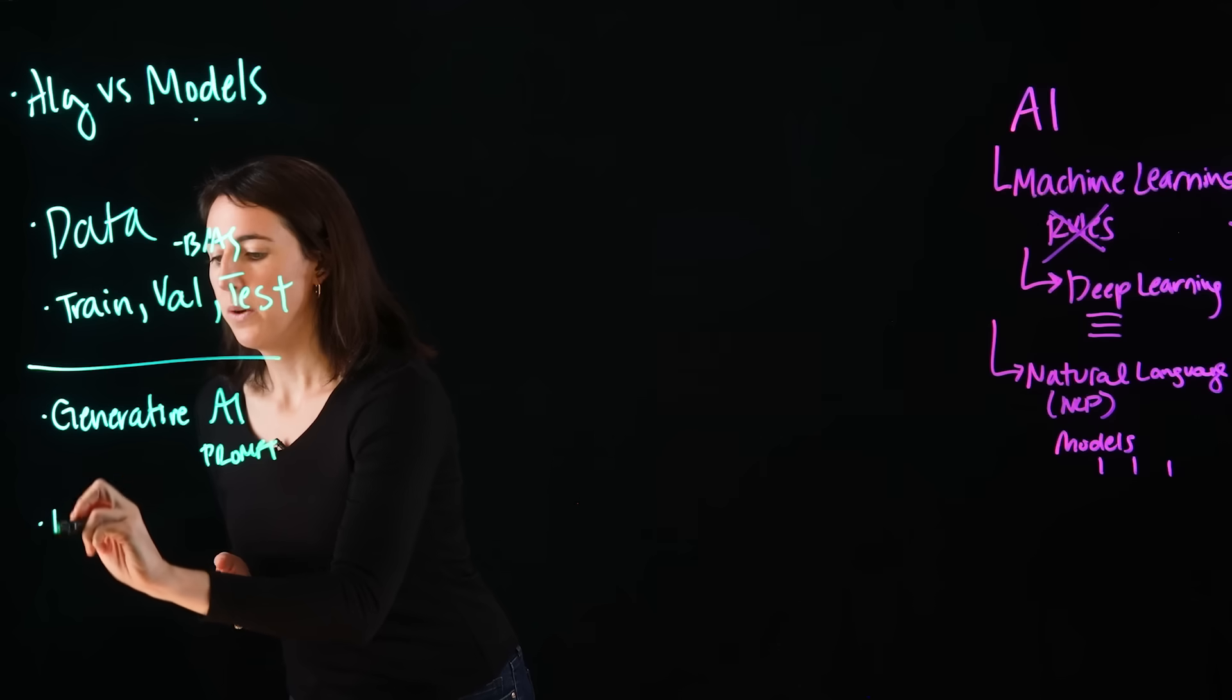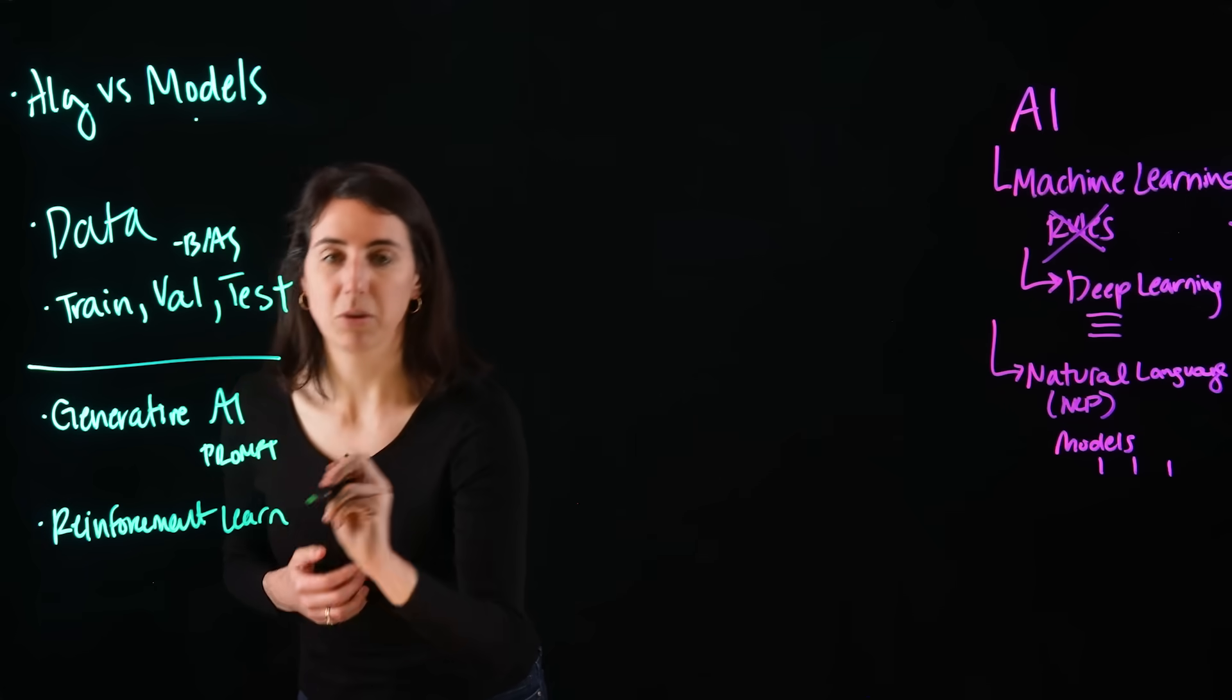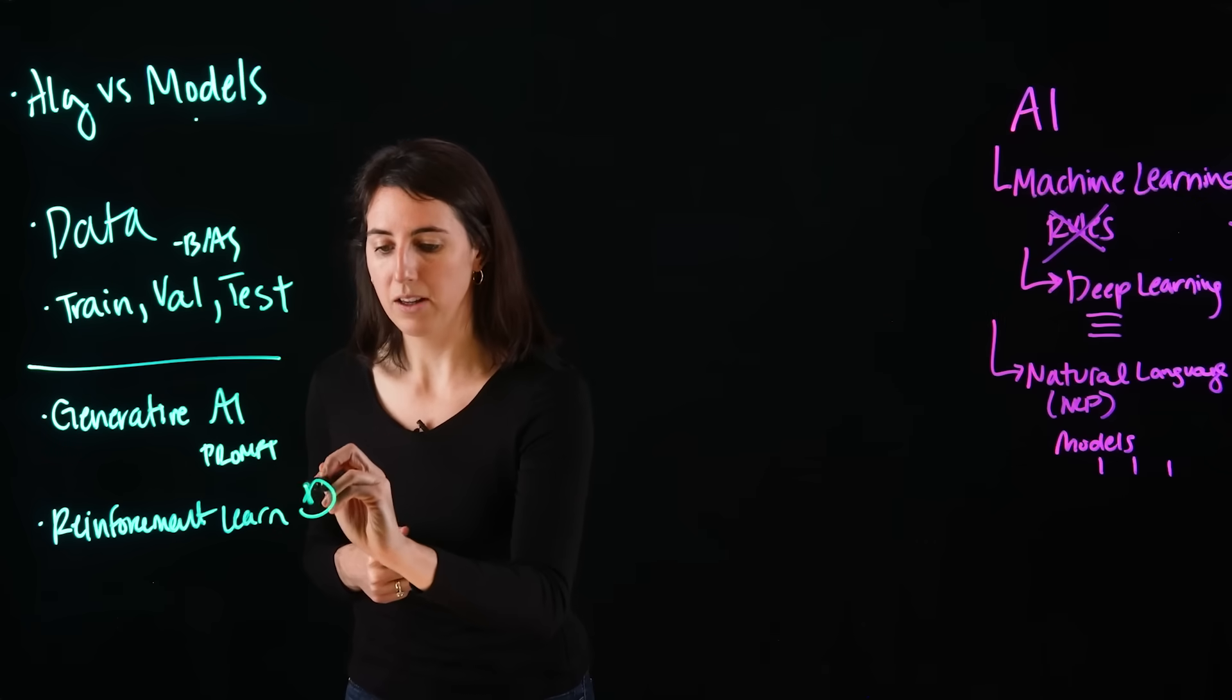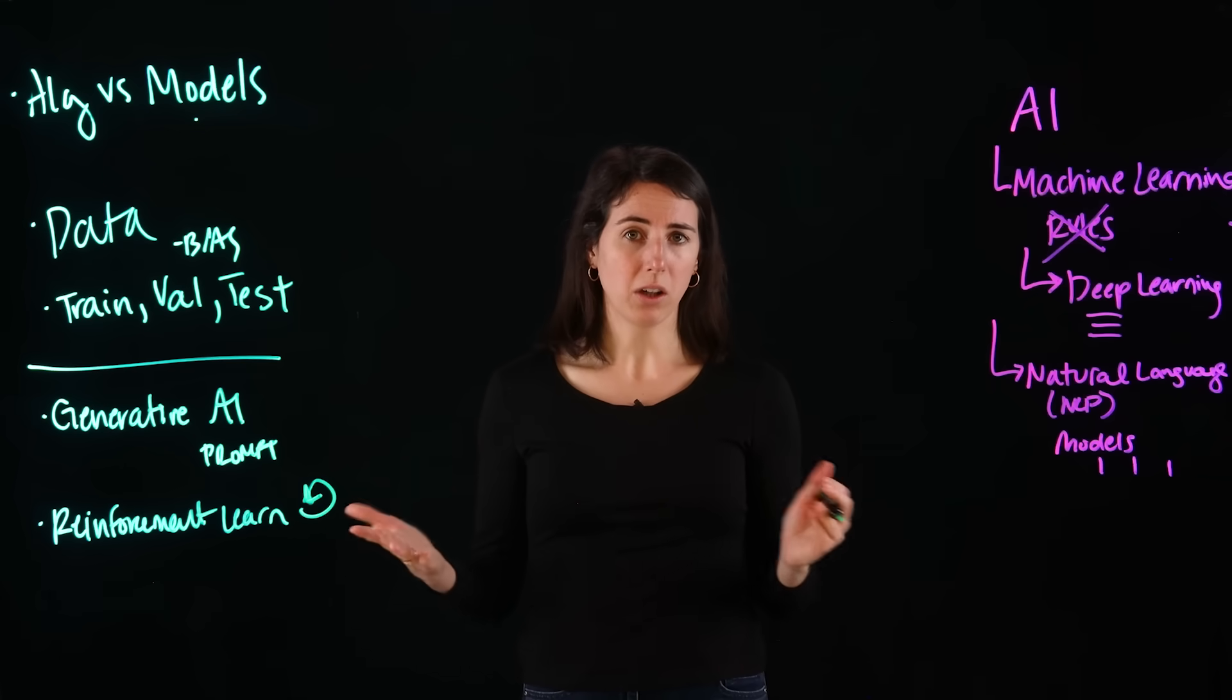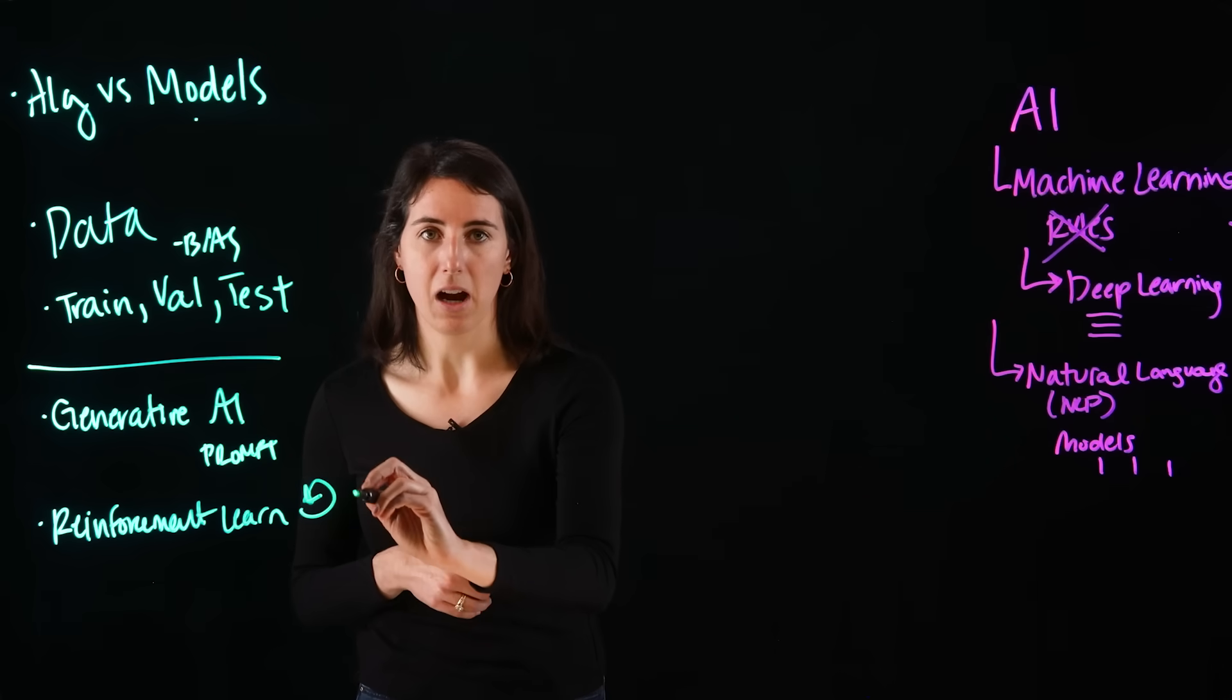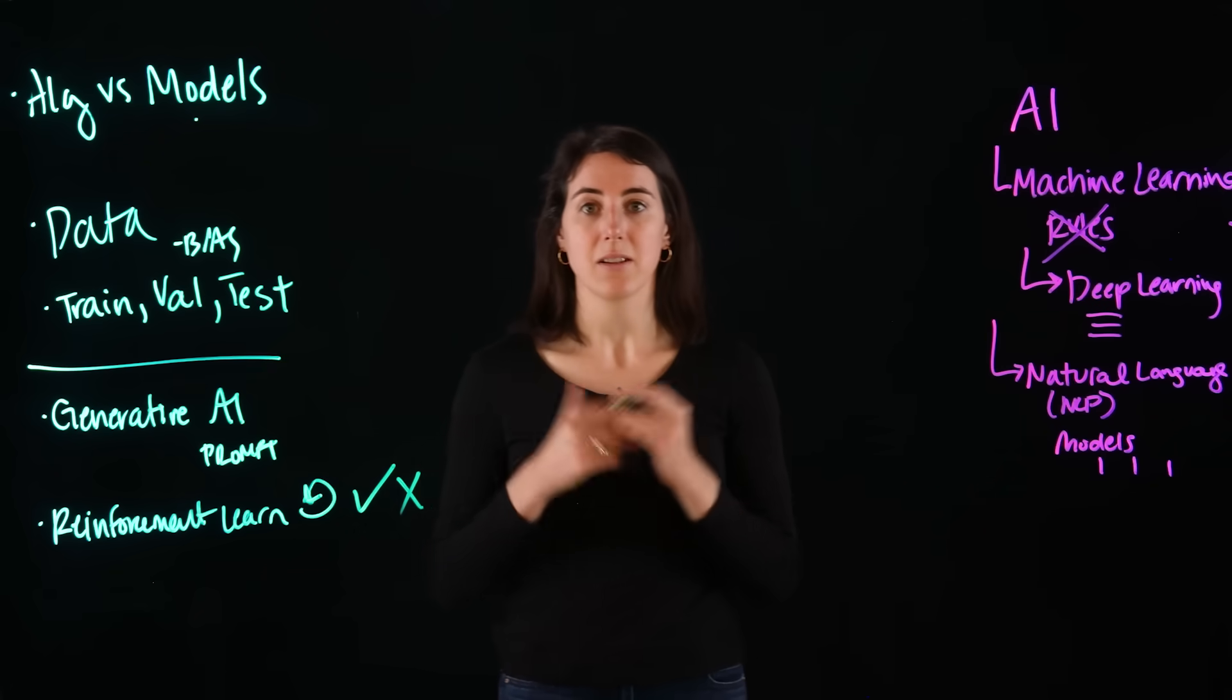We also have reinforcement learning. Reinforcement learning is a type of machine learning—it's AI that learns by trial and error. It's like teaching a robot to walk or an AI agent to complete a task. Instead of being told what to do, the agent or robot figures it out by trying different actions and learning what leads to good outcomes and what leads to bad outcomes.